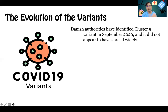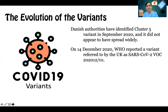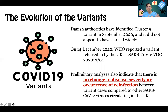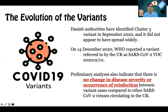One cluster found in Denmark appeared not to have spread widely. Then on December 14, 2020, the World Health Organization reported a variant referred to as the UK variant. This was worrying, particularly for diabetic patients, since diabetics are at increased risk of COVID-19 infection. However, preliminary analysis of this new UK variant indicates no change in disease severity or occurrence of reinfection compared to other circulating SARS-CoV-2 viruses.